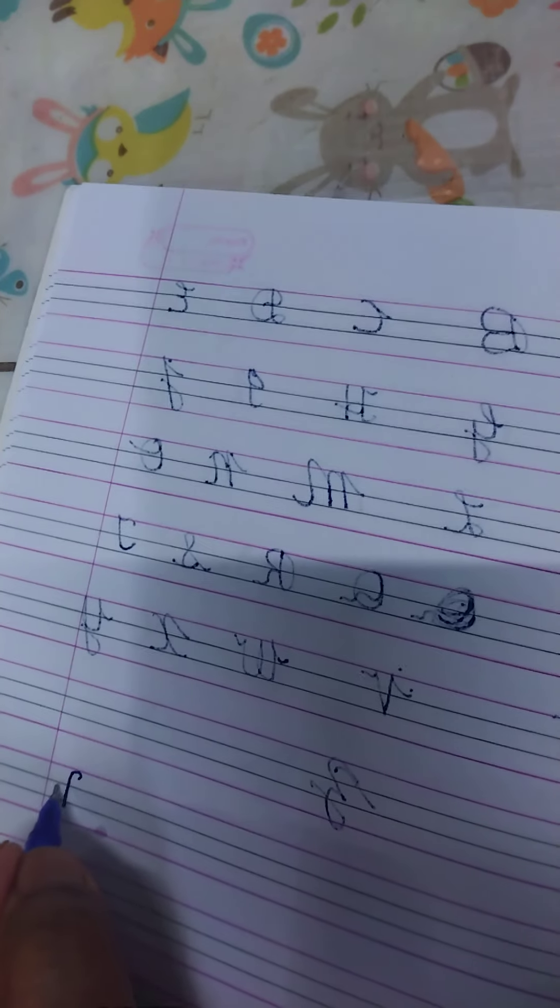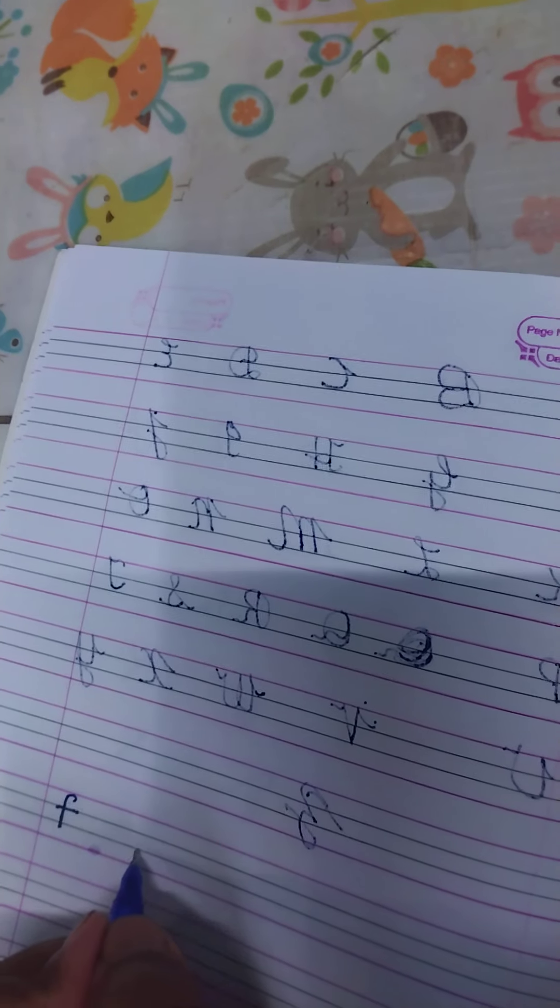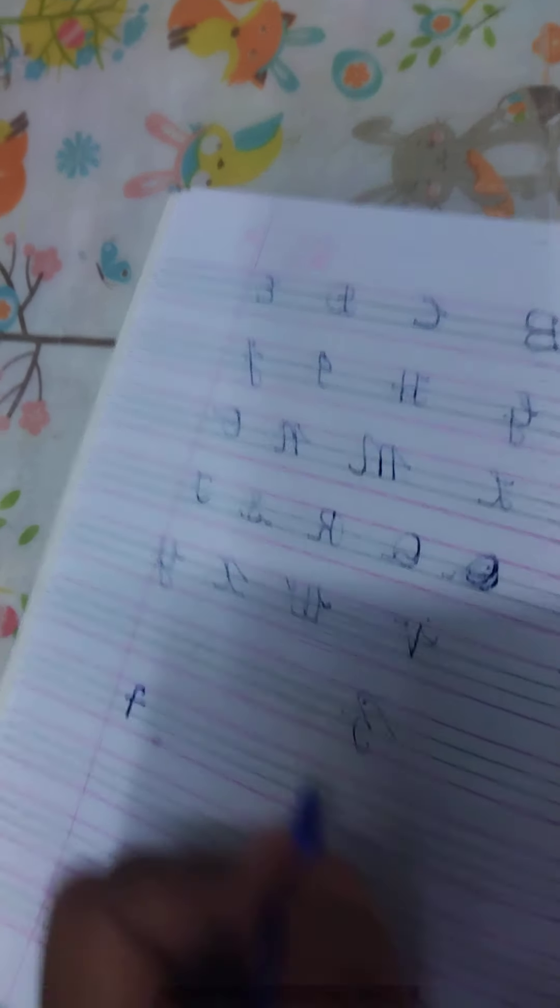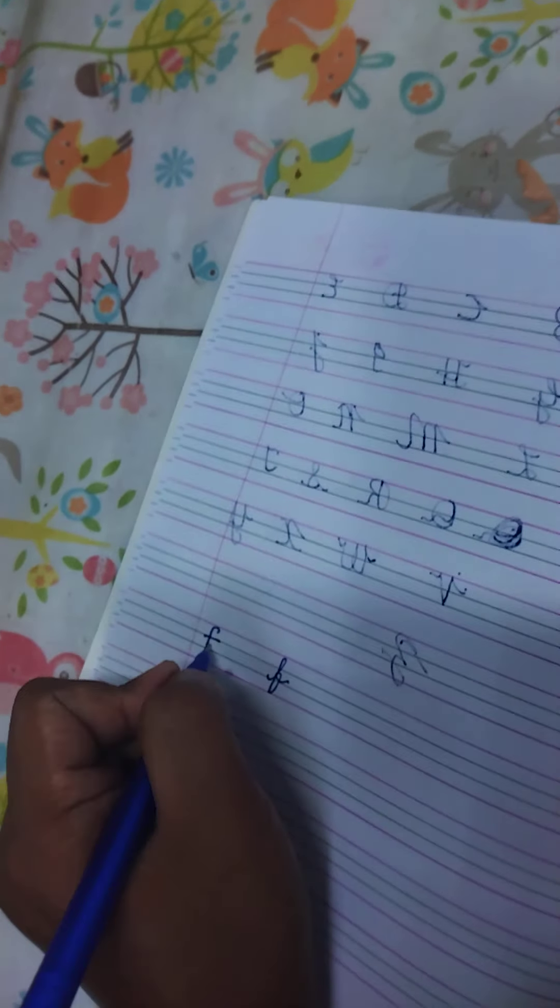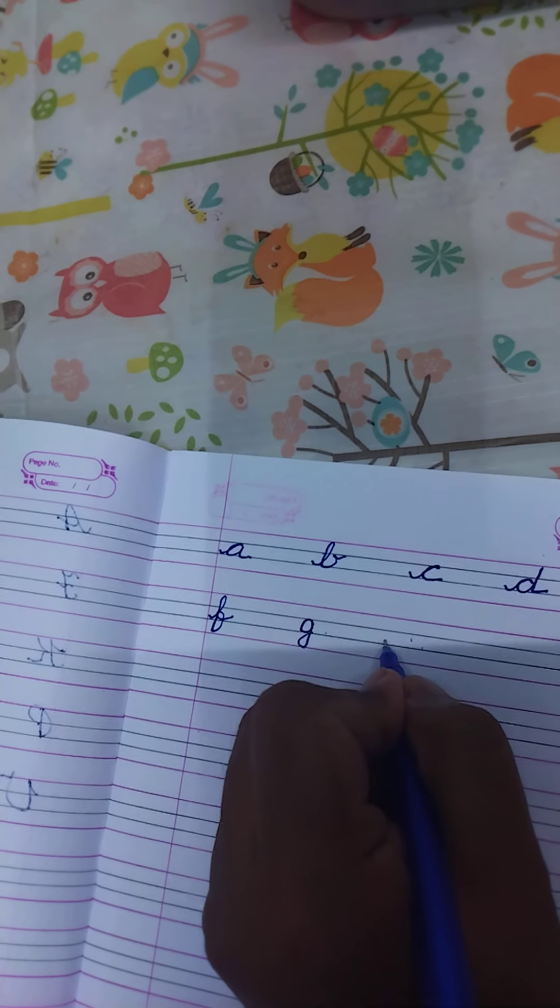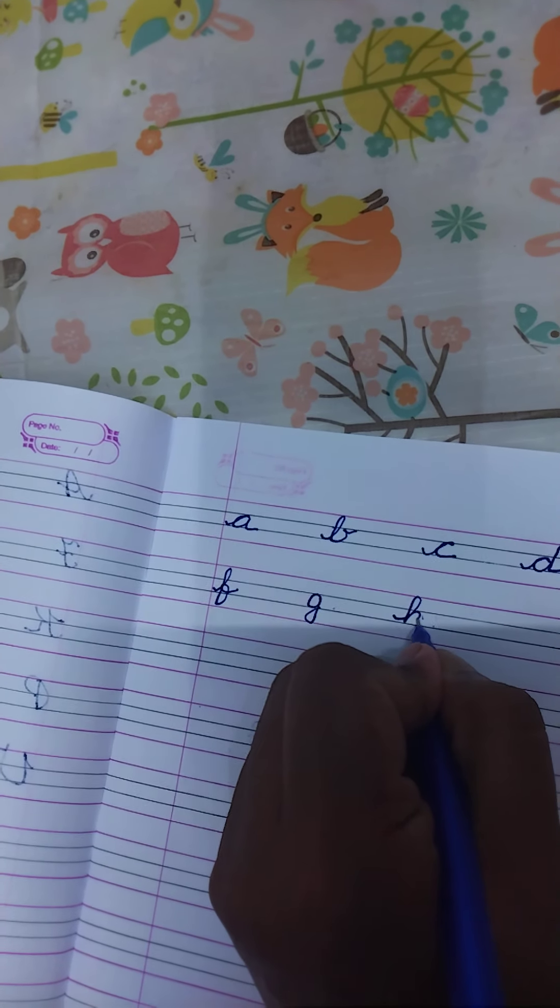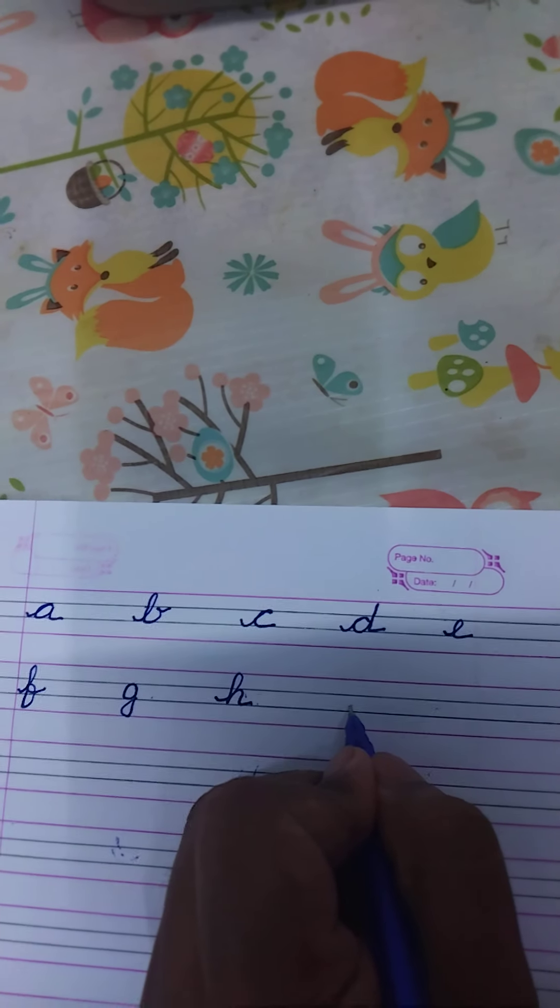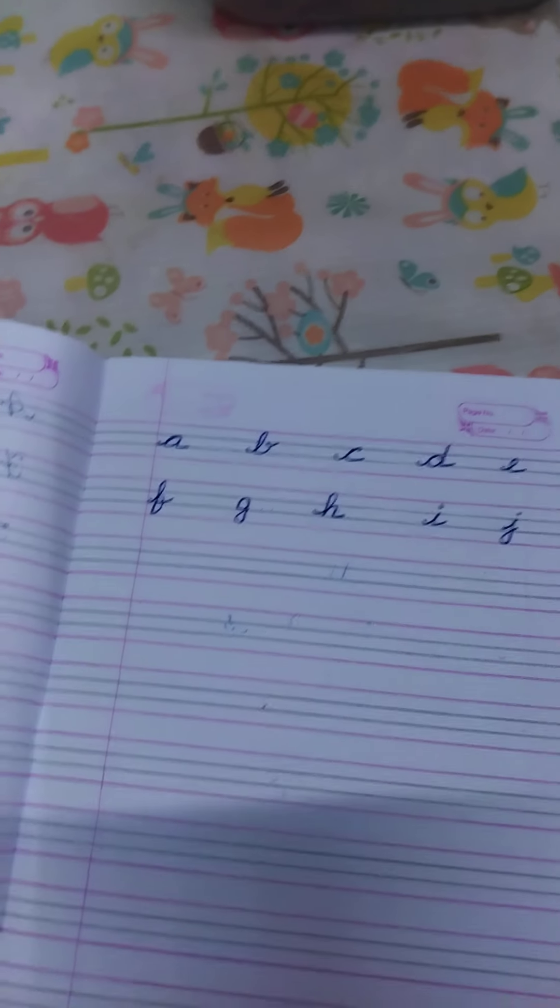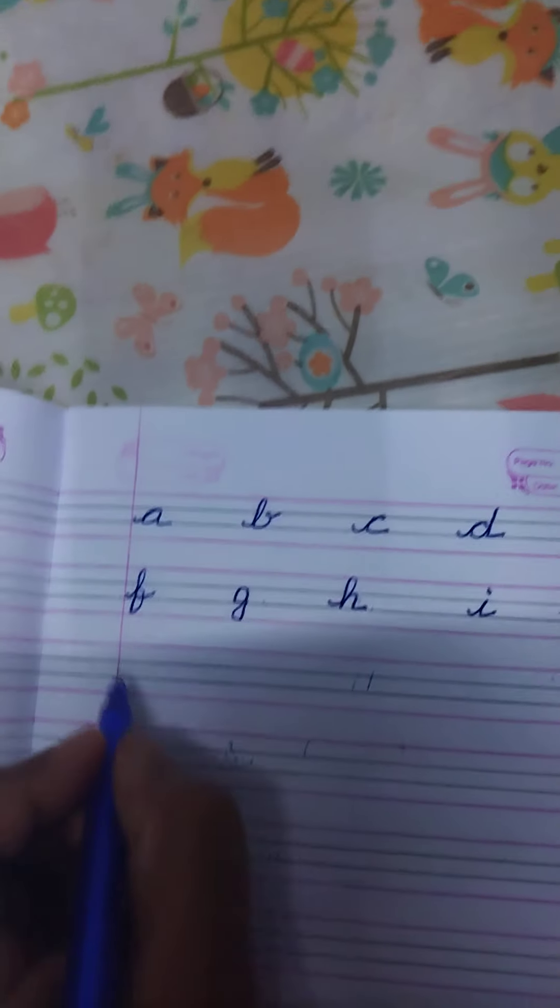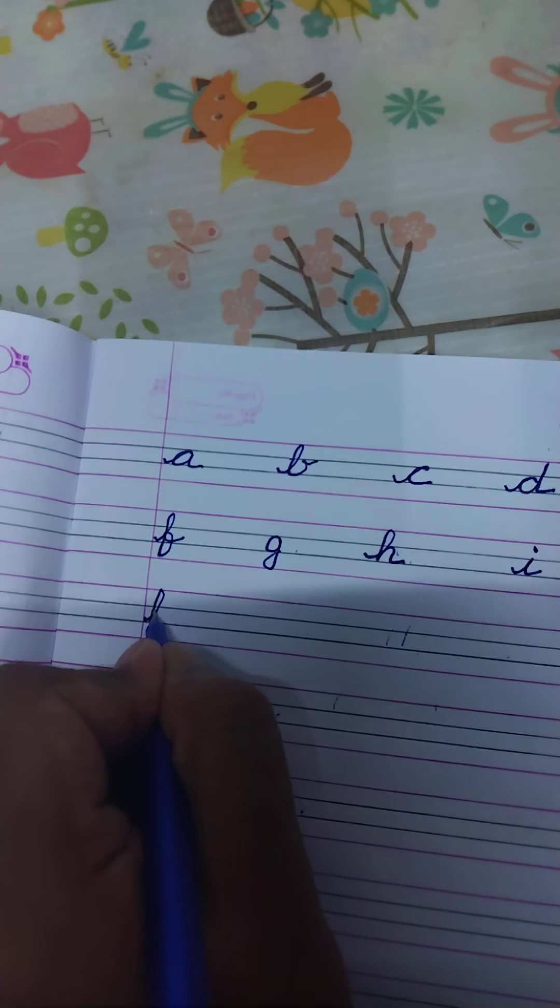This small letter F is not capital letter, this is small letter. It should be this one. In cursive this is not cursive, this is cursive. G, you have to write like this. H, I, J. My hands are shaking, that's why I cannot take properly. K should be like this.